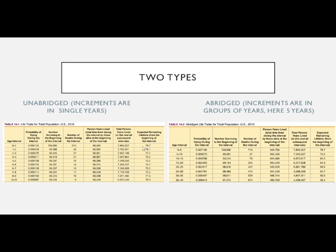Based on 2010 data, a newborn in 2010 would be expected to live almost 79 years — in general, not specific to race, gender, or any of those things. And then the abridged version presents the same information but in five-year intervals.